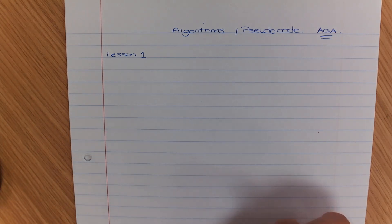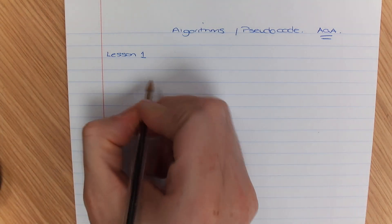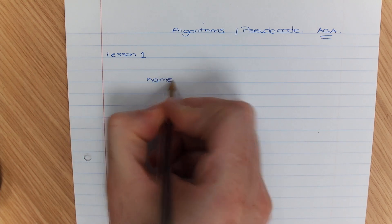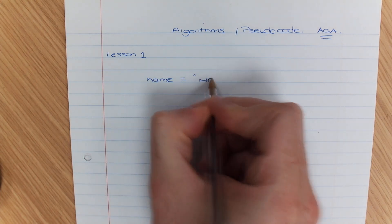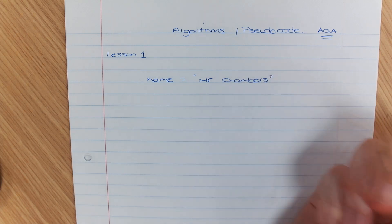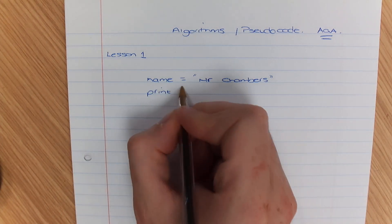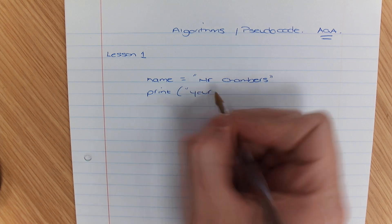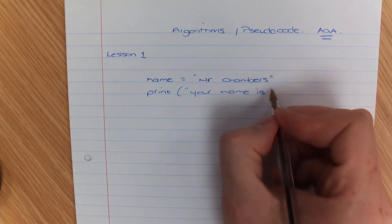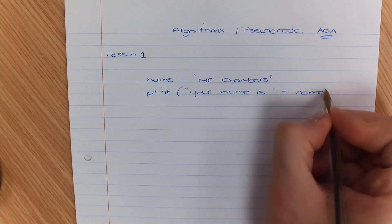Now whereas when you are coding with Python you will find that to do that coding a lot of the time you will have done something like name equals Mr. Chambers and then you may have done something along the lines of print your name is speech marks plus name and that will concatenate that.